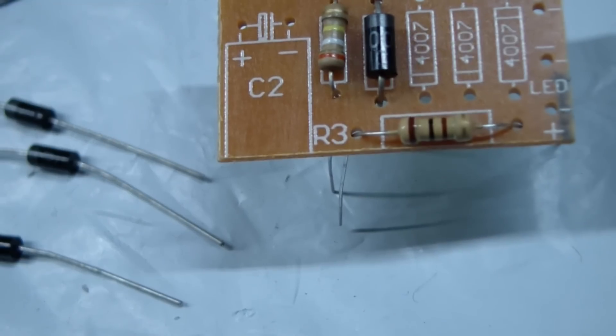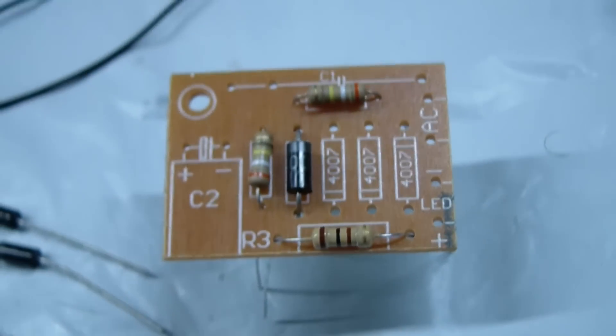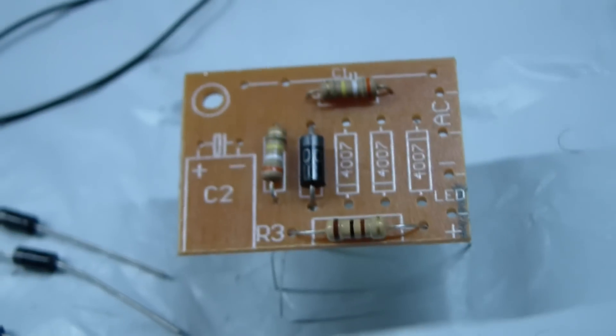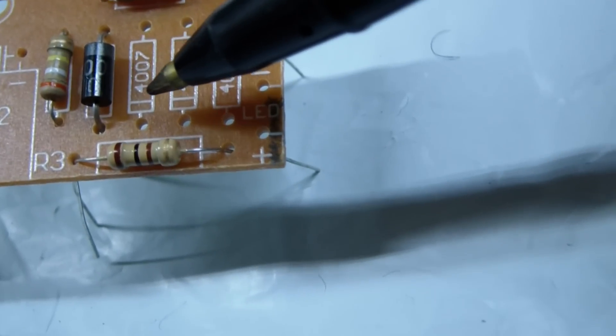And then R3 is supposed to be 100 ohm. You can see that's brown, black-brown. I guess that's 100 ohm. And on the diodes, you can see how there's a band on the end of the diode.